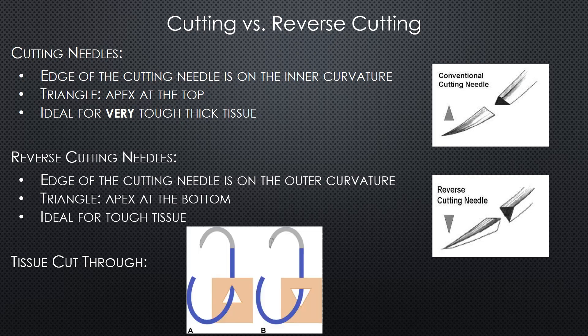Here is an image that beautifully illustrates the idea of tissue cut-through. Image A depicts the path that the conventional cutting needle takes. Note that the cutting needle leaves behind a triangle hole in the tissue, with the apex of the triangle pointing towards the edge of the wound — pointing towards the top.